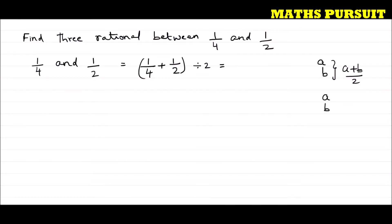Similarly, if there are three numbers a, b, c, the mean is (a + b + c) / 3. Here we have two numbers, so let us add 1/4 and 1/2, and then divide that sum by 2.